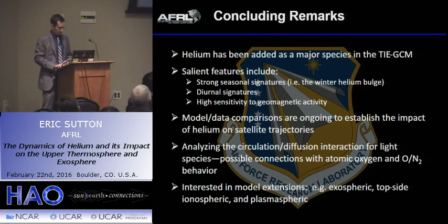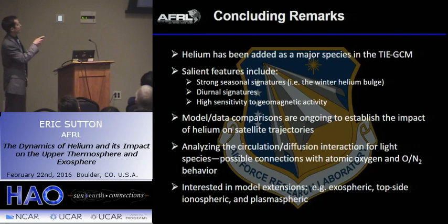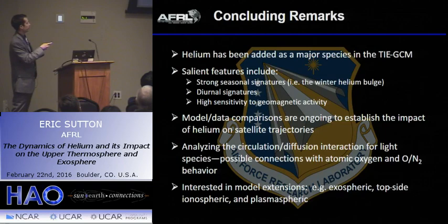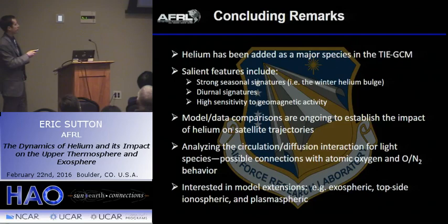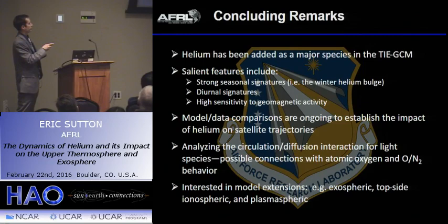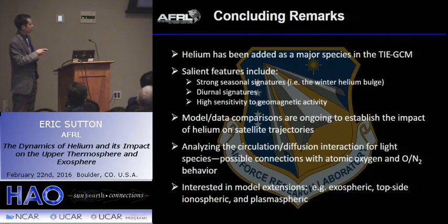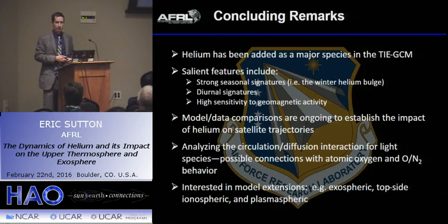In conclusion, I've shown the development of the neutral helium capability in TIE-GCM, shown some of the salient features, and done model-data comparisons for validation. I'm looking at the circulation-diffusion interaction and would like everyone's thoughts on that. There are possible connections with atomic oxygen, another light species in the thermosphere, and possibly with ionospheric behavior. I'm certainly interested in future model extensions, whether neutral, ionospheric, or plasmaspheric, and I'd be happy to talk with anybody about those developments.